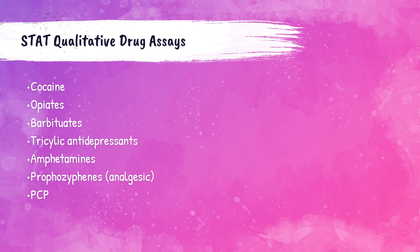Working in a hospital laboratory, you'll likely see a lot of drug assays performed. The recommended STAT qualitative urine drug assays — these are yes/no, positive/negative tests — are cocaine, opiates, barbiturates, tricyclic antidepressants, amphetamines, PCP, and propoxyphene, which is an opioid pain reliever.